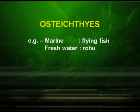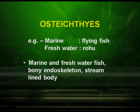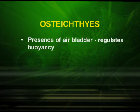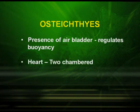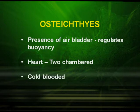The next class is Osteichthyes, which includes the marine flying fish and the freshwater rohu. They have a bony endoskeleton and a streamlined body. There is presence of an air bladder which helps in buoyancy. Heart in these animals is two-chambered and they are cold-blooded animals.